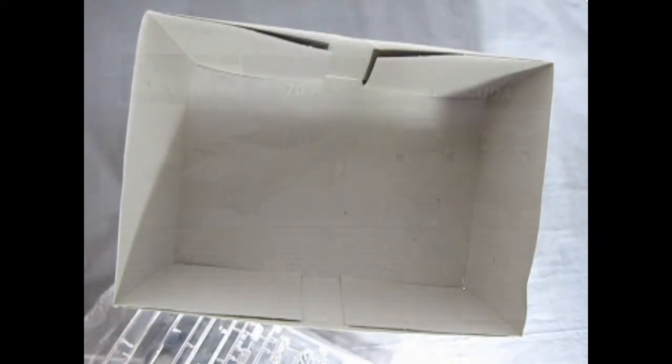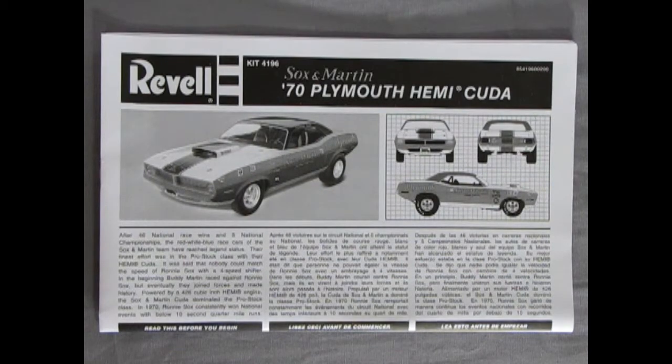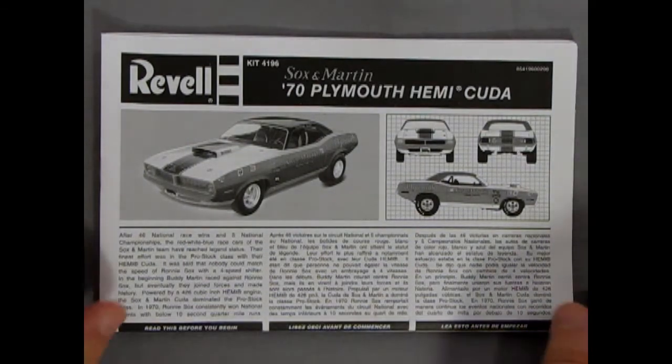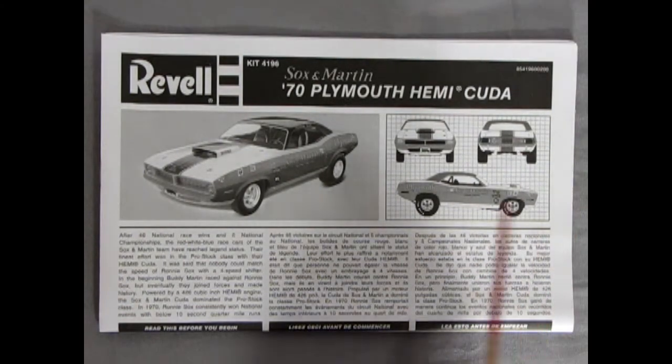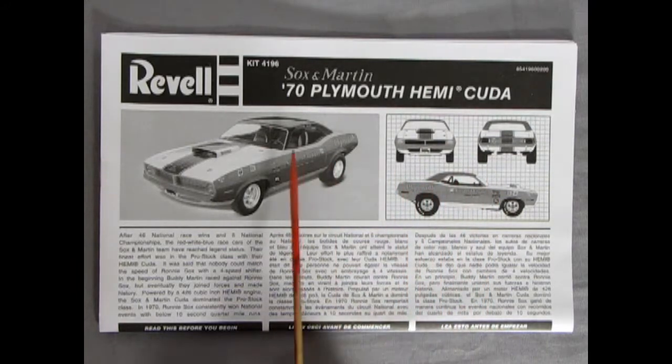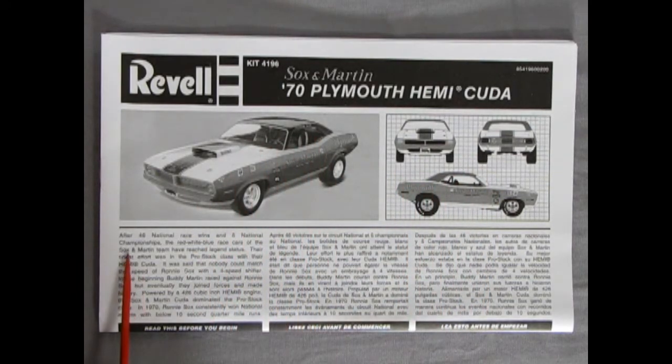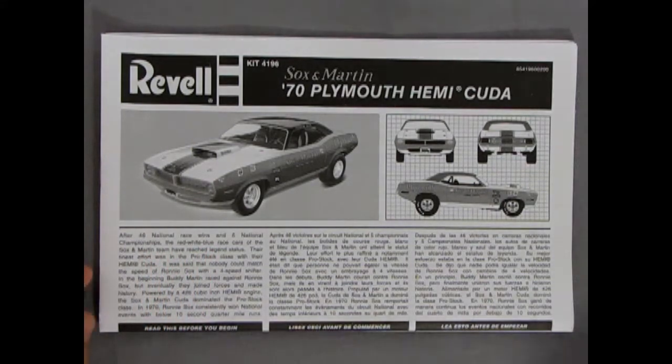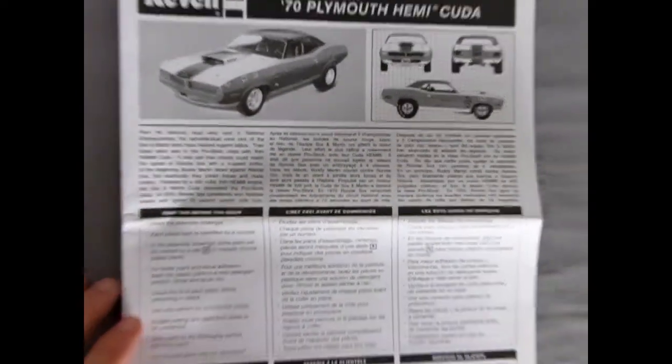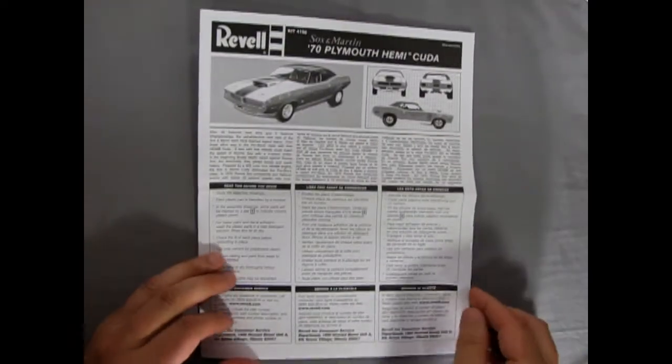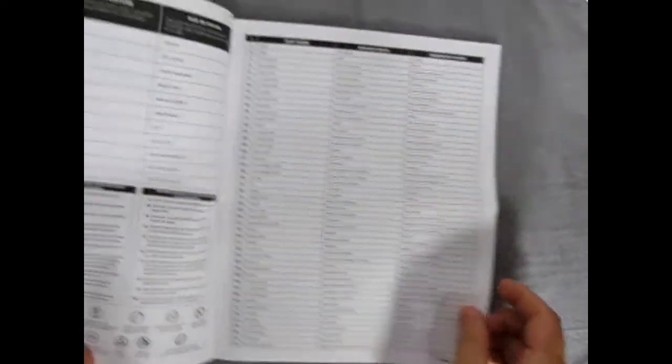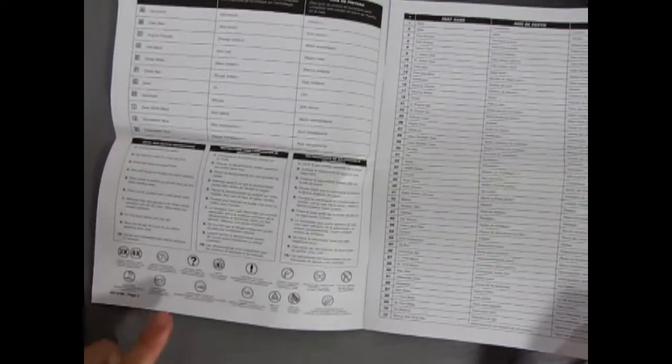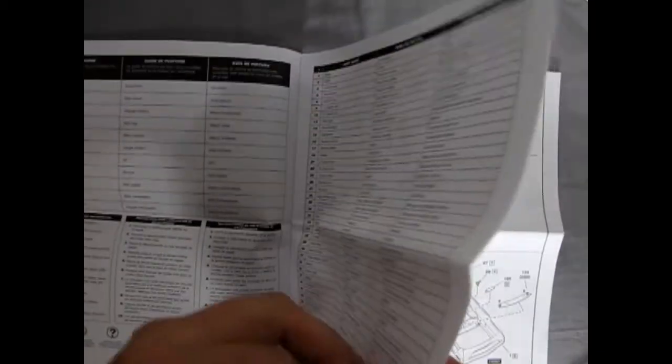Here we are with our 1970 Plymouth Hemi Cuda from Sock and Martin, and of course you get some nice illustrations of the model as well as a picture. And here of course we have what it said on the box, the history with the 46 national race wins and on and on. And now as we open this up, of course we'll zoom our camera back so we can see what's going on. There's all our parts lists and everything, the symbols for what we need to watch out for.